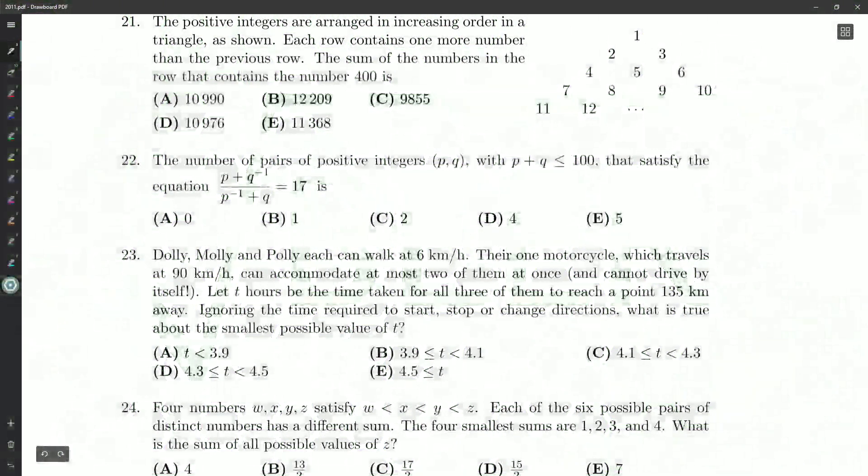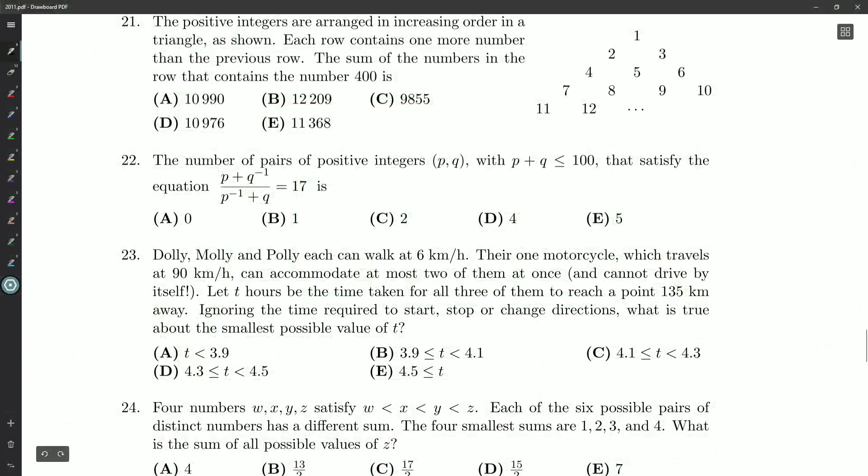Hello, everybody, and welcome back. We are on question 22 of our 2011 Fermat paper. The number of pairs of positive integers p, q, with p plus q less than or equal to 100, that satisfy the relationship p plus q inverse, so that's 1 over q, divided by p inverse plus q is equal to 17.